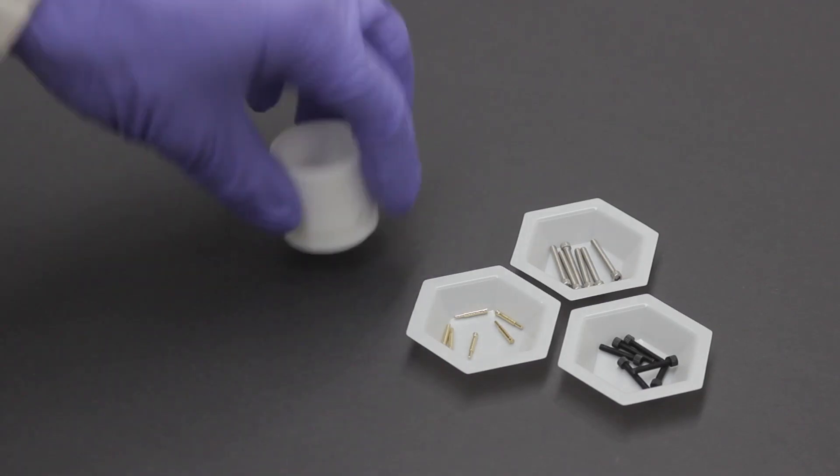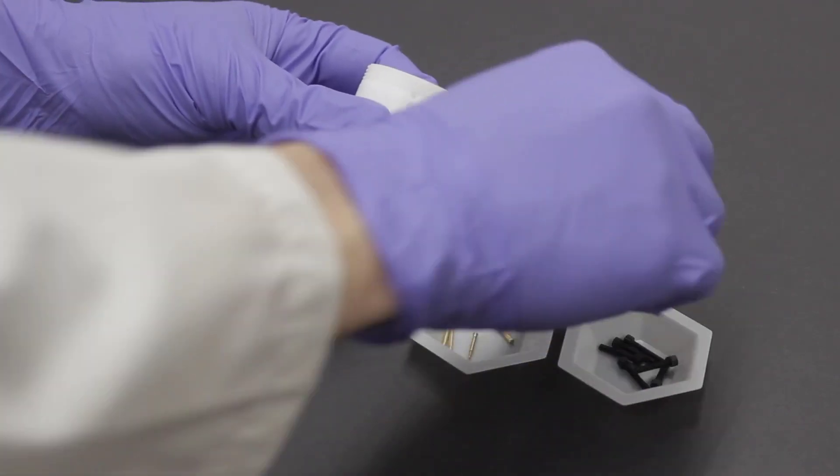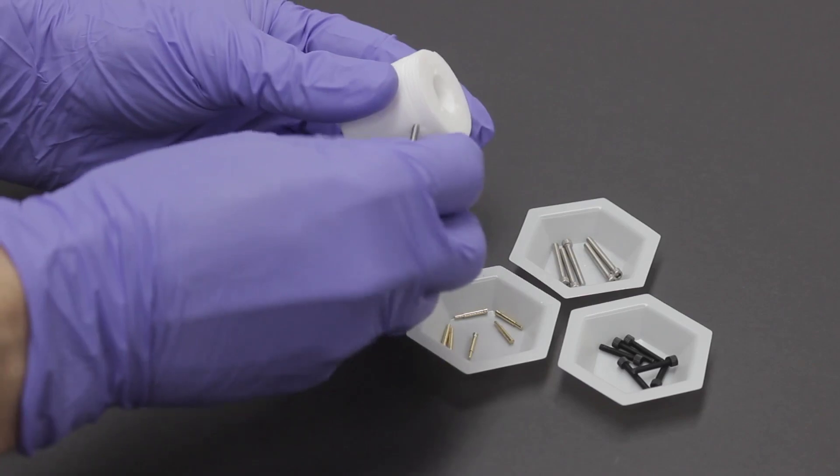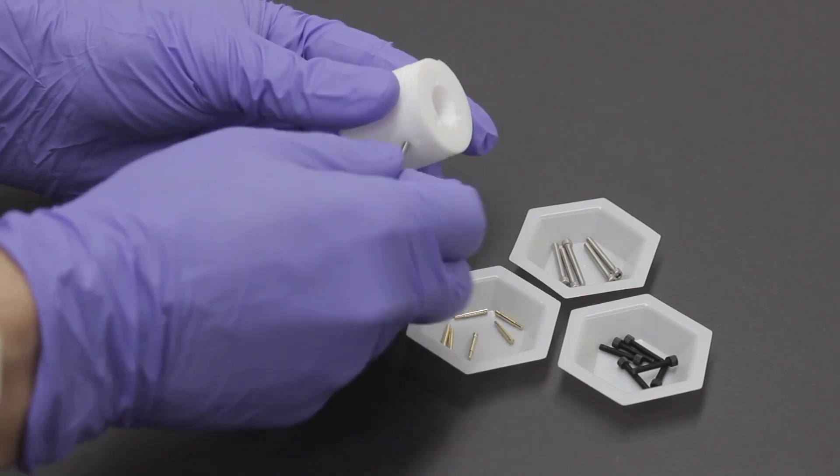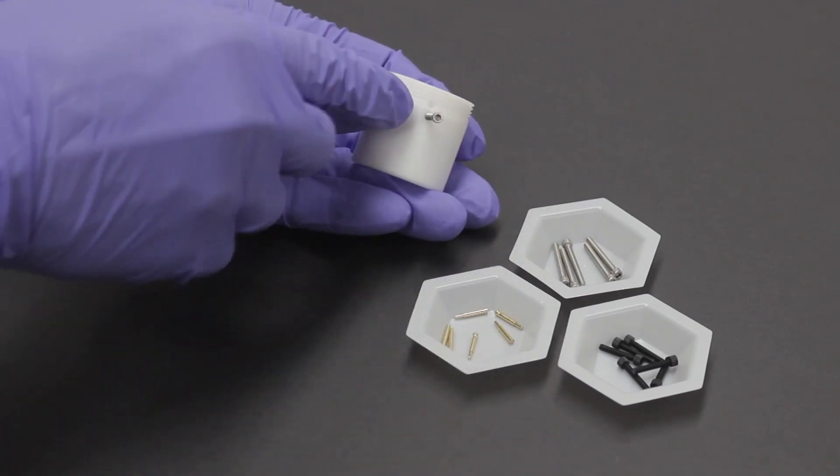Take the cell base and hold it upside down so that the external threads are facing up. Next, install a stainless steel contact screw into one of the holes furthest from the threads.